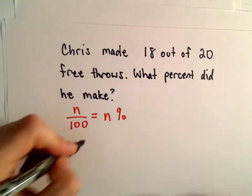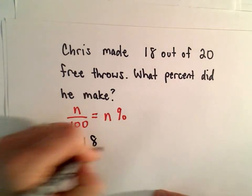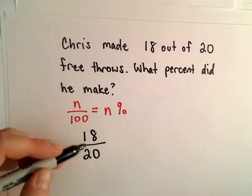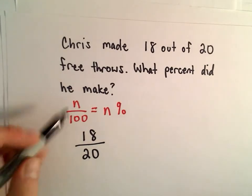So Chris made 18 out of a total of 20, so our fraction is going to be 18 over 20.